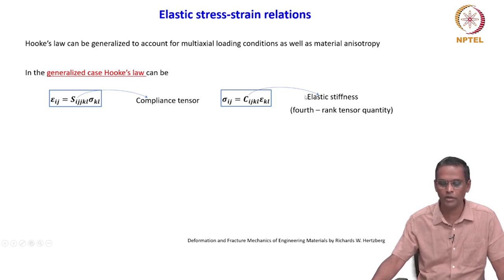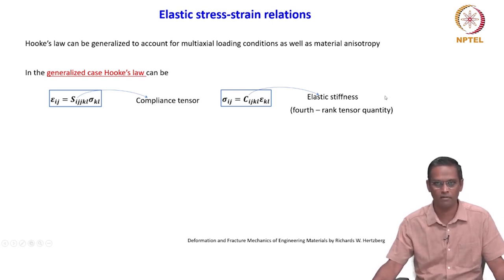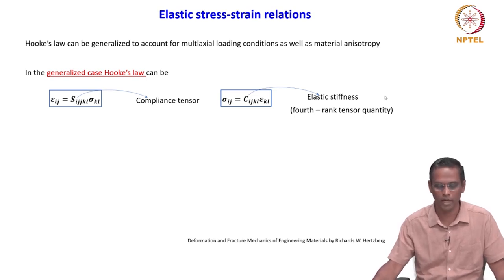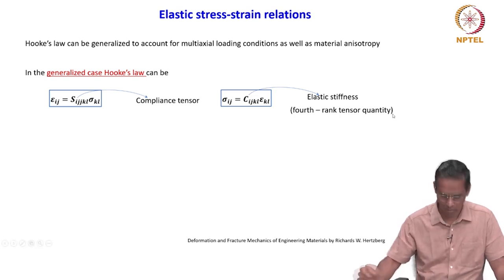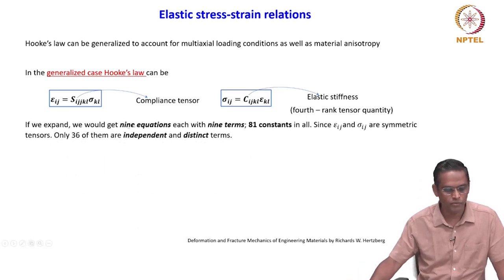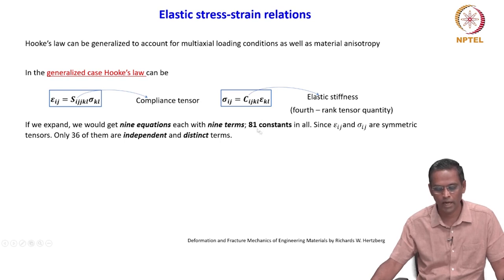We now know how many constants the elastic stiffness tensor will have. Using the formula 3 to the power n for a fourth rank tensor, if you expand, you would get 9 equations each with 9 terms, giving a total of about 81 constants.